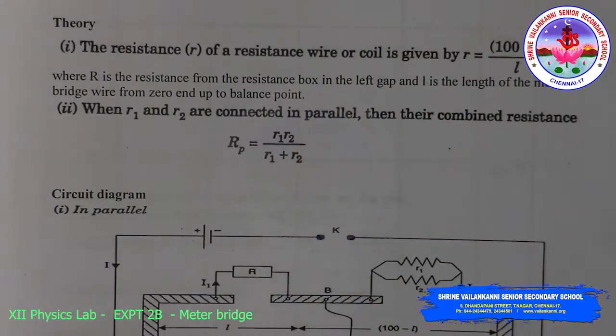Theory. The resistance R of a given resistance wire or coil R equals 100 minus L by L into R.